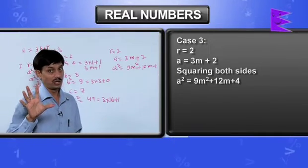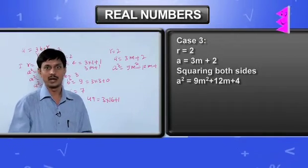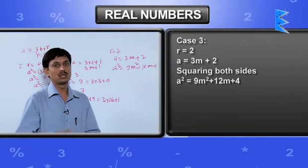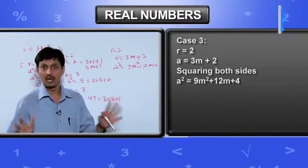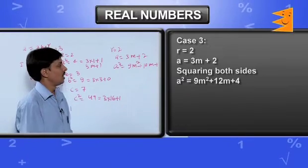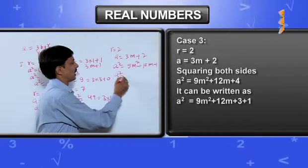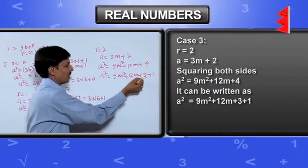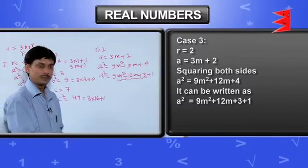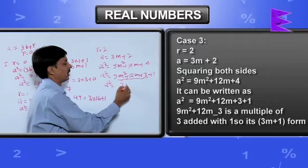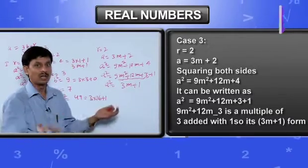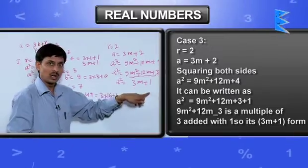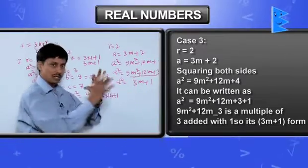I just would like to tell you what is the difference between equation and identity. Identity is true for all values, whereas equations are true for particular number of values. This is the basic difference. This can also be written as 9m square plus 12m plus 3 plus 1. Here, this part is multiple of 3 added by 1. Again, we are finding it is 3m plus 1.